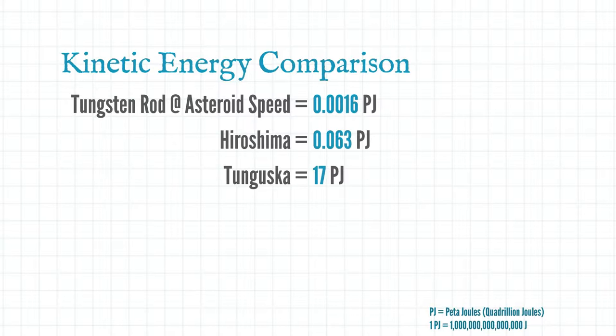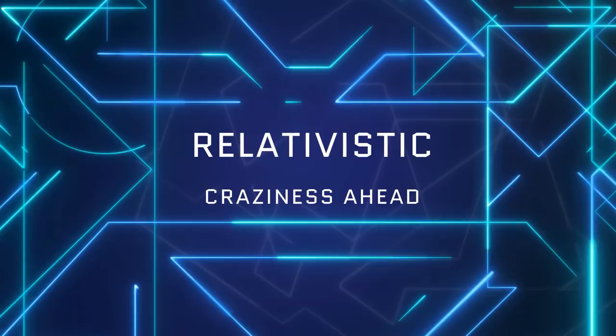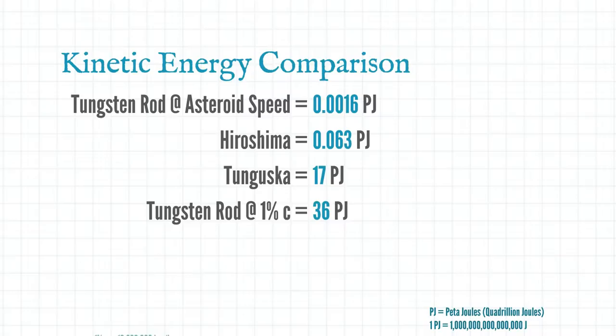Okay we're about to get relativistic. Things are going to get freaky. So here's our tungsten rod and we're going to whack it up to one percent of the speed of light. Now the impact from this weapon gives out 36 petajoules which is twice that of the Tunguska impact.